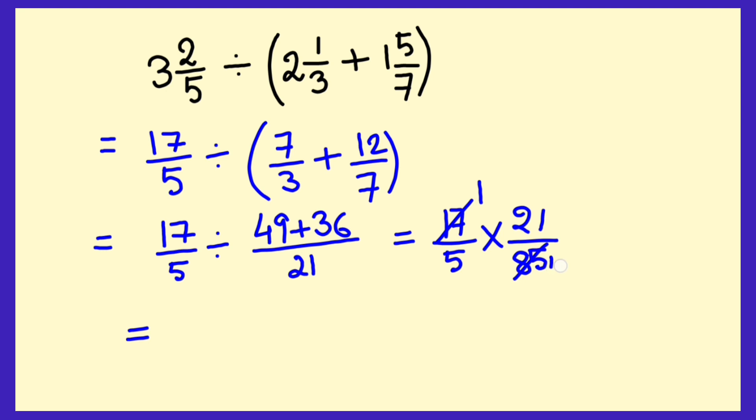You cancel it, 17 into 1, 17 into 5 and no more cancellation is there.